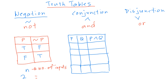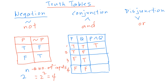With 2 to the power of 2 we get 4 possible combinations, labeled rows 1 through 4. Starting with the second column, you alternate T, F, T, F. On the first column you write two T's then two F's. For conjunction, the output is only true when both statements are true, so that gives T in the first row and F for the rest.